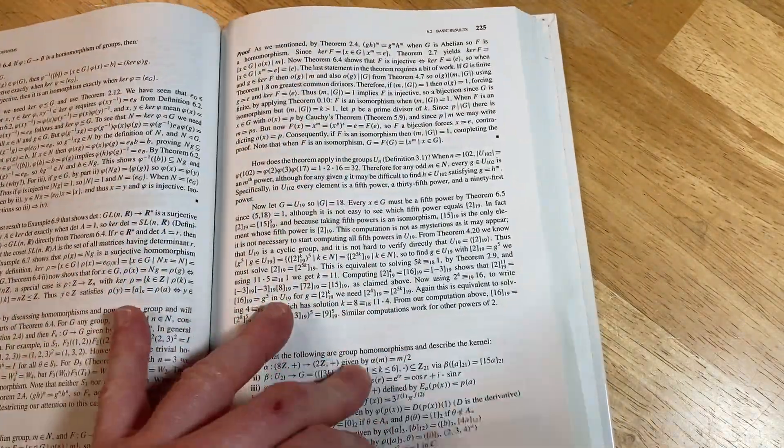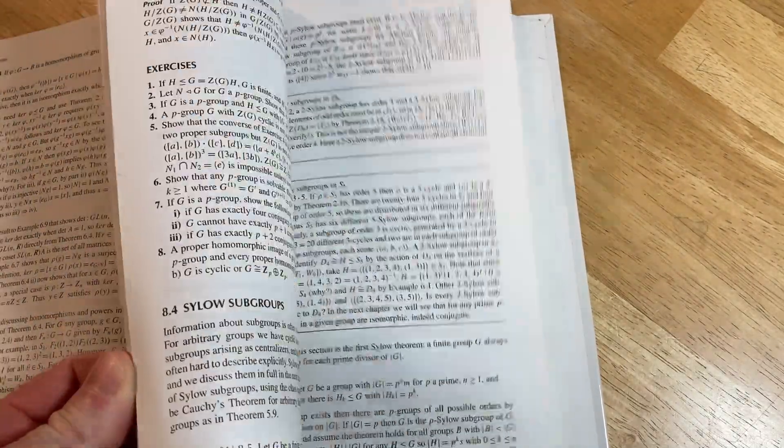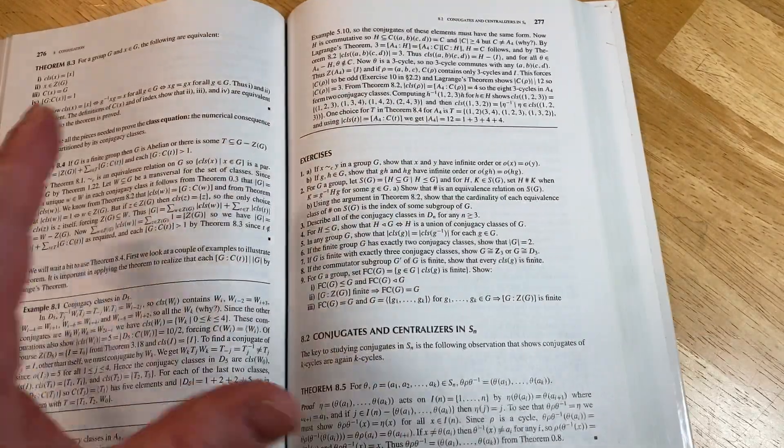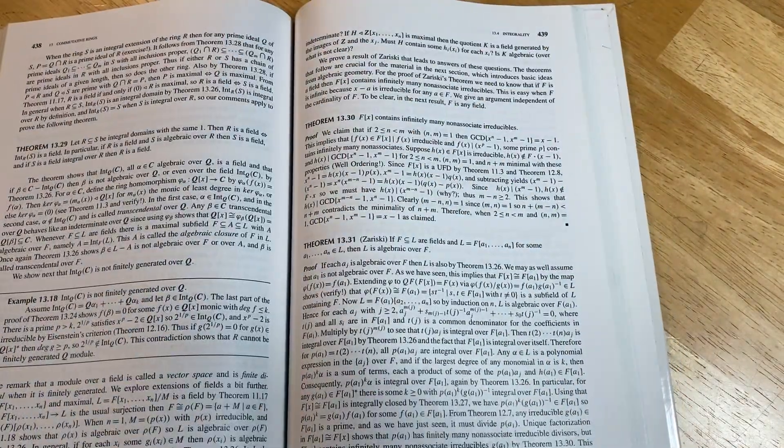So it's kind of like a middle-of-the-road book. It's not as comprehensive as Dummit and Foote, but it's certainly got more content than Saracino. So it's somewhere like a mid-level abstract algebra book.